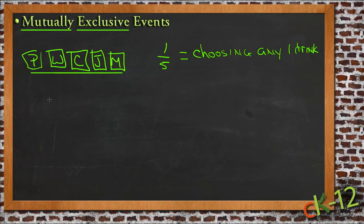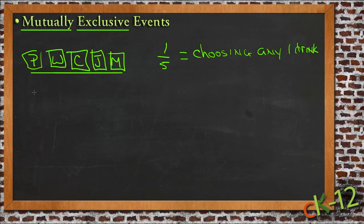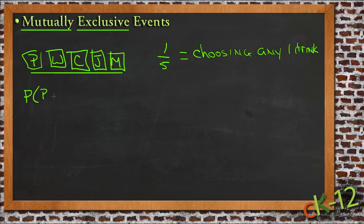Mutually exclusive events would be a situation where we come in and say: what is the chance that he's going to choose Pepsi or choose water? Instead of just finding out what is the chance he's going to pick any one drink, we want to see where he's going to pick any one of two drinks. A mutually exclusive event calculation would be figuring out what the chances are of him choosing Pepsi or Coke.